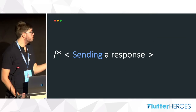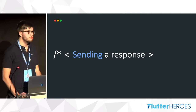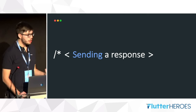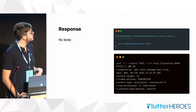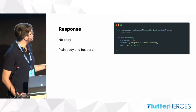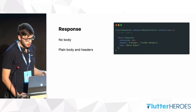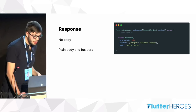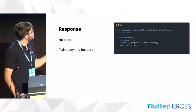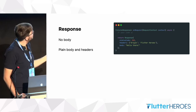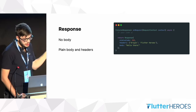We've seen how to handle a request — now we can try to answer it. This is possible using the Response class. You can respond without a body, just with a status code; or with a plain body and headers, one or both. The Response default constructor lets you specify a status code (defaulting to 200), a headers map (string to string), and a body as a string parameter.